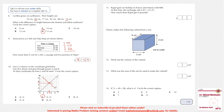Ruple goes on holiday to France and returns with 80 euros. The exchange rate is 1 euro = £1.25. How much does Ruple get in pounds? We multiply 80 × 1.25, which gives £100.